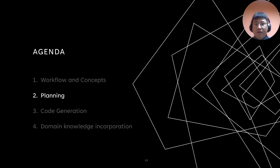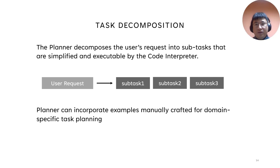Let's talk about task planning. In general, the user's request is turned into a set of sub-tasks that are simpler to solve. When the planner composes the prompt, we allow adding manually crafted examples to help the model plan better, especially for complex tasks. Each example includes the user query and the desired planning result.